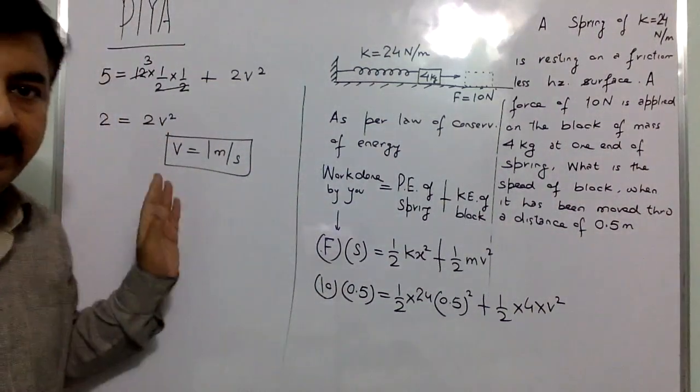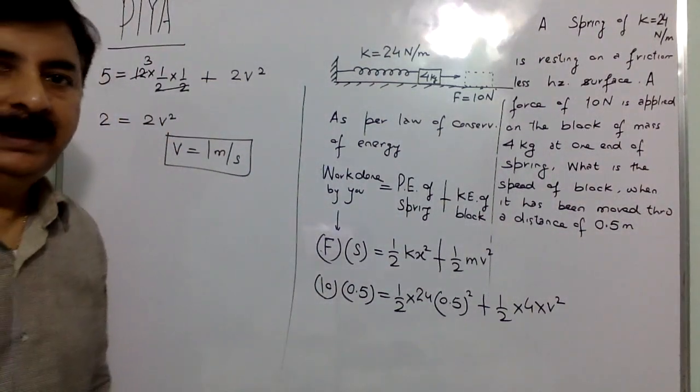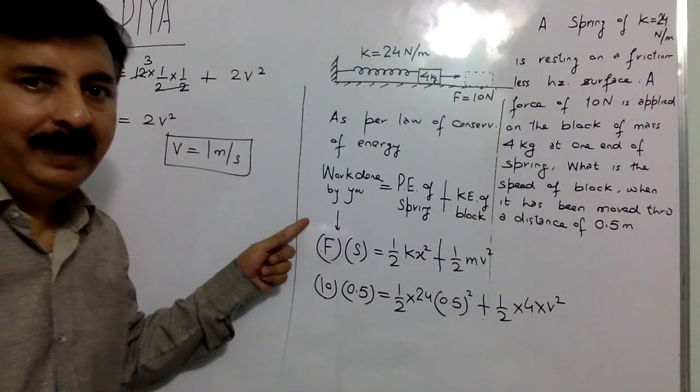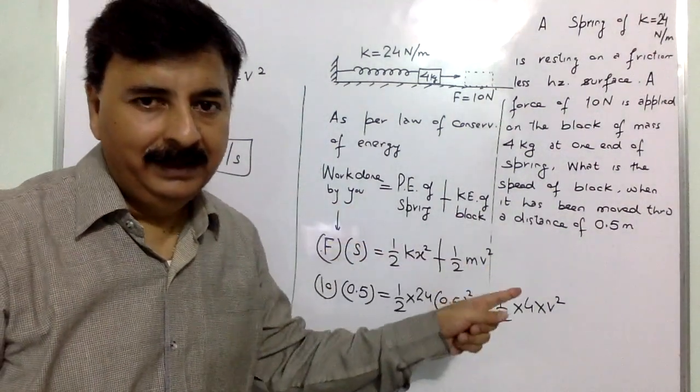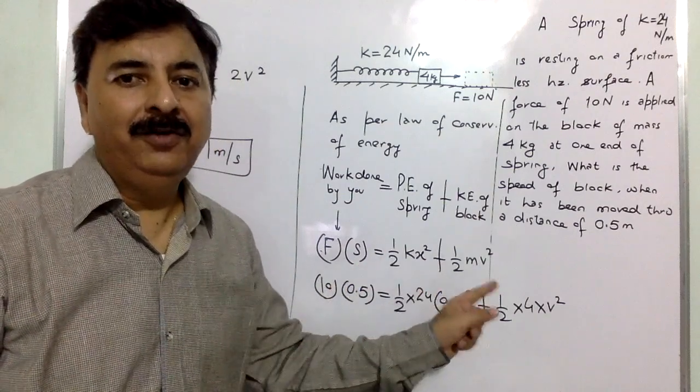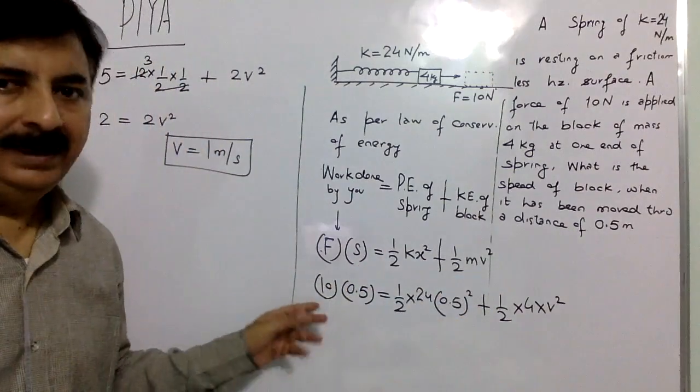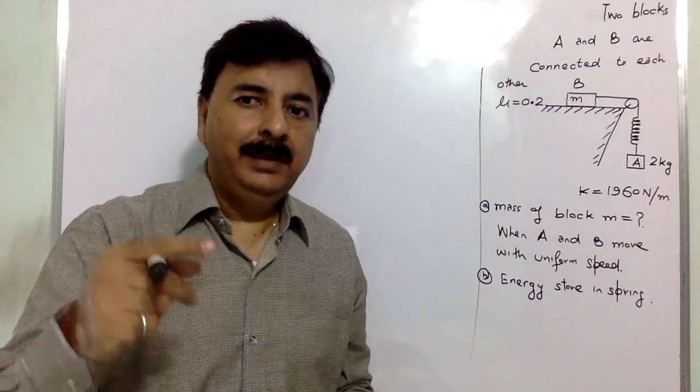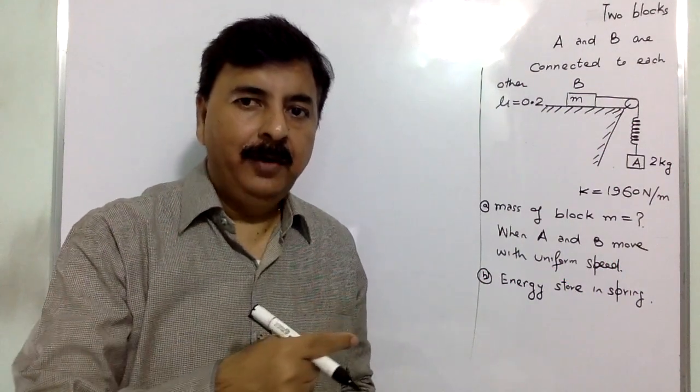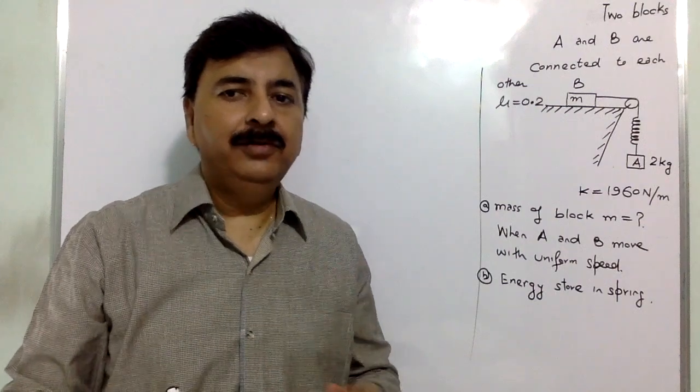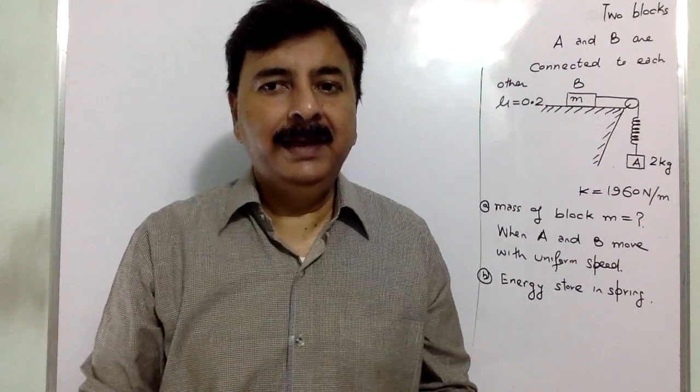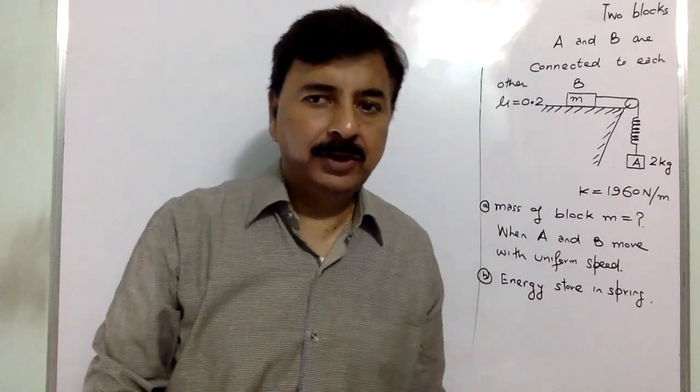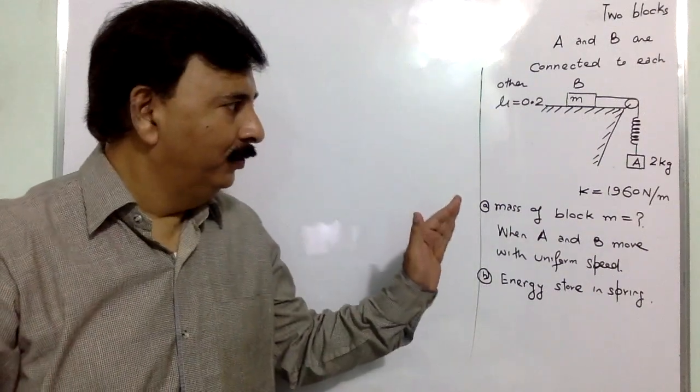Clear? So the velocity it gained is 1 meter per second. So as per law of conservation of energy, work done by you is potential energy plus kinetic energy. F into x plus half kx square plus half mv square. Like that we can solve. More good question. If you have joined from here and you have not seen the previous DNA, then I will request that you watch the previous DNA so that you are able to understand well.